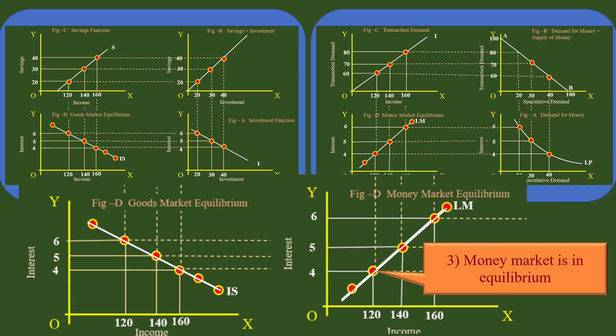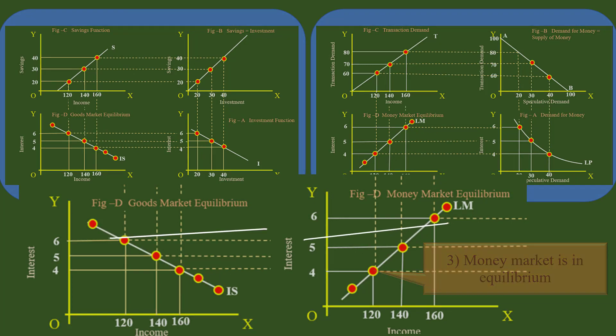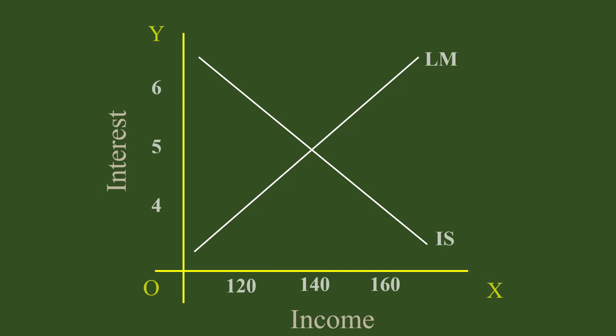At what level of interest and income are the goods market and the money market in equilibrium simultaneously? To find this, let us present the two curves on the same graph. Examining this graph, at point E, the two curves cut each other.